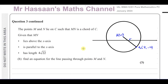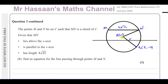So the chord MN is above the x-axis and parallel to the x-axis. Let's say it's going to be a horizontal line. The numbers will give us the right answer. M and N is a chord line that goes through these two points — it's going to be above the x-axis, and the length of the line is 4 root 22. We already worked out the radius was 13.